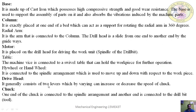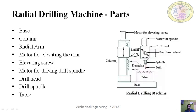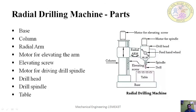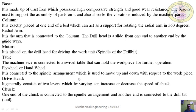The drive head generally consists of two levers which, by varying, can increase or decrease the speed of the chuck. The chuck, as usual, is used to hold the drill bit and connect it to the spindle. One end of the chuck is connected to the spindle and the other end is connected to the drill bit. The chuck holds the drill bit and connects it to the spindle — it is the arrangement linking the drill bit with the spindle. These are the important parts of the radial drilling machine.